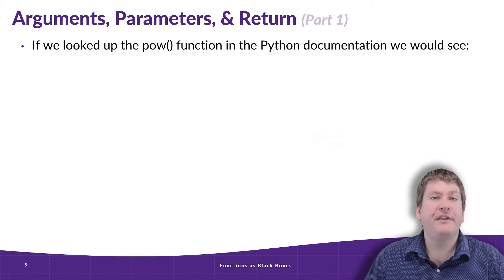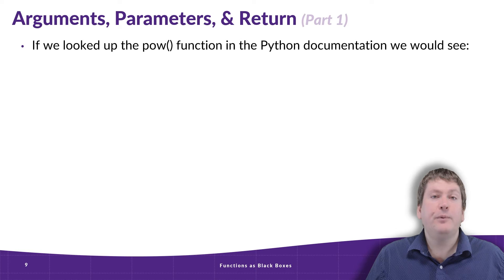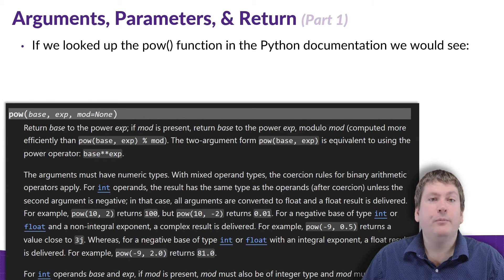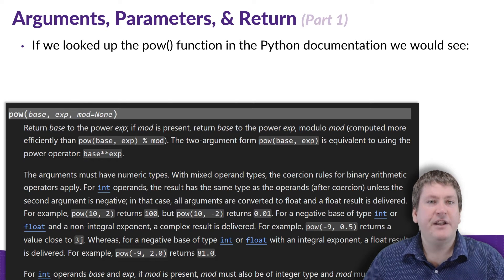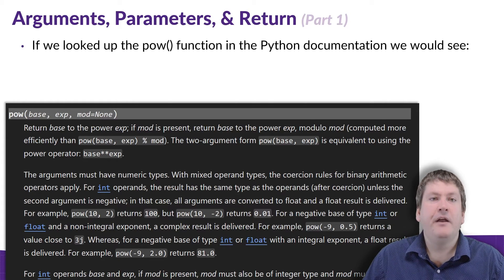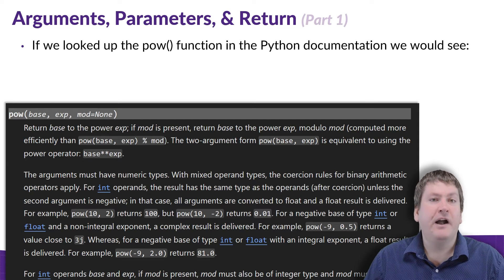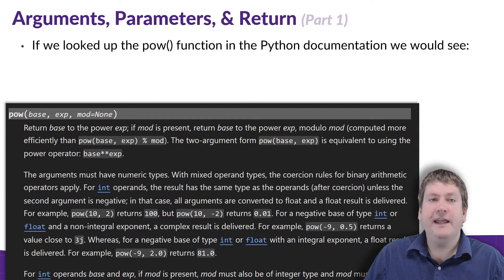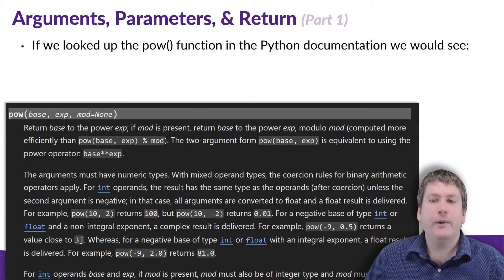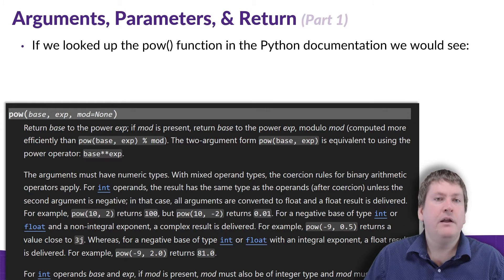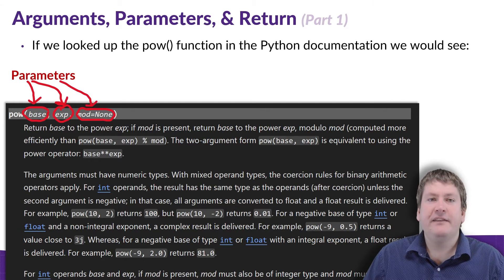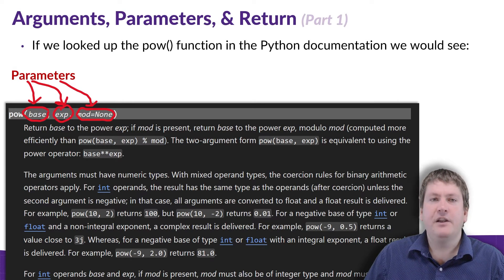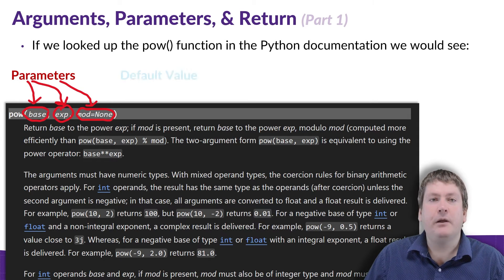So in that last example, we were sending some values to the pow function. But how did we know what values to send it and what order to put them in? Well, typically, you would find this out by looking up the function's documentation in Python's official documentation. So since pow is a built-in function, Python does provide a description of it, as well as a list of parameters it takes. So we can see that documentation on the screen now. And the way we would read this is: first we have that function name, pow, but then we have a list of parameters. And this tells us what inputs this function takes, as well as the order they come in.